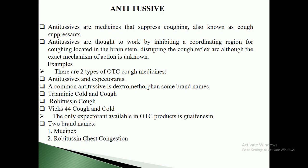Anti-tussive agents are medicines which have the capability to suppress coughing, which is also known as cough suppression. Anti-tussives are thought to work by inhibiting a coordination region for coughing located in the brain stem, disrupting the cough reflex, though the exact mechanism of action is unknown. There are two types of over-the-counter cough medicines: anti-tussives and expectorants. Coughs are of two types: productive cough and dry cough. Expectorants are used for productive cough whenever there is sputum during coughing.